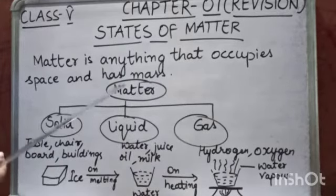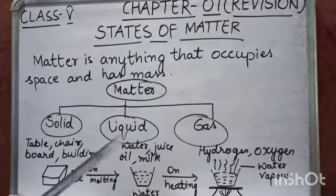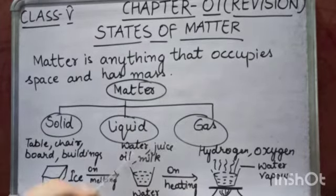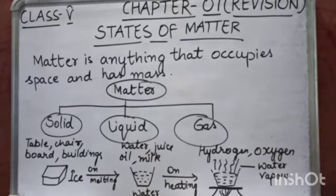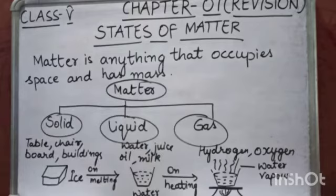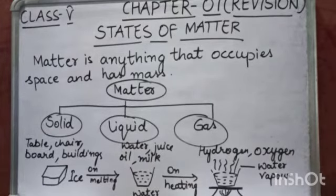Now matter has three states — it occurs in three states: solid, liquid, and gas. So whatever we see around us, they are either in solid form, liquid form, or gaseous form.